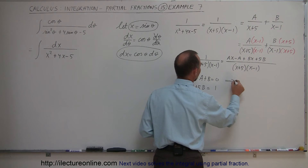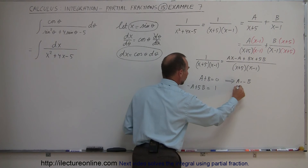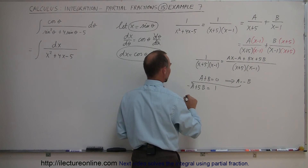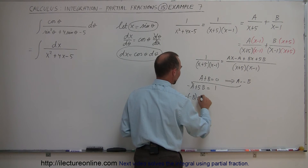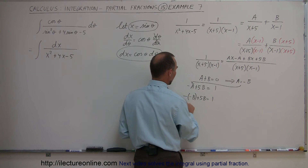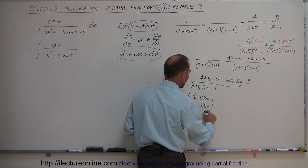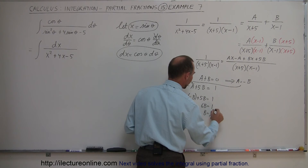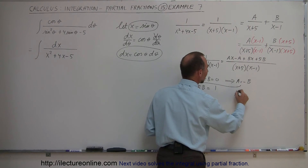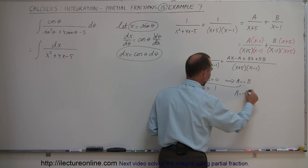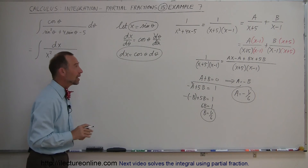From the first equation, A equals minus B. Substituting into minus A plus 5B equals 1 gives minus(minus B) plus 5B equals 1, so B plus 5B is 6B equals 1, meaning B equals 1/6. Since A equals minus B, A equals minus 1/6. We now have both constants A and B.